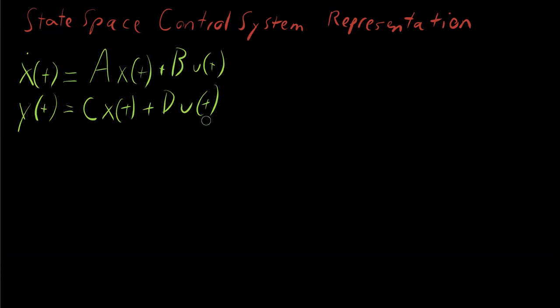What you're seeing here is that the output y of t is a linear transformation, C is a matrix, of the state of the system, plus some linear transformation of the input signal itself. Now, each of these terms has a definition and an explanation. Let's go through them step by step.